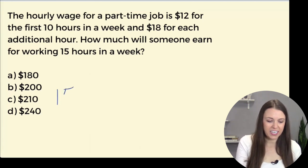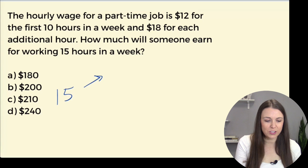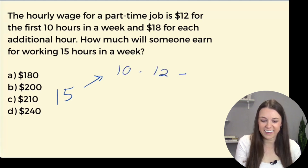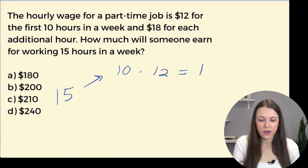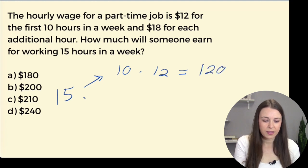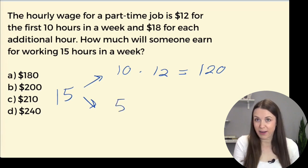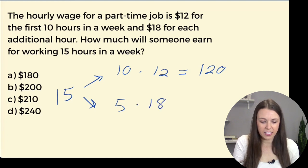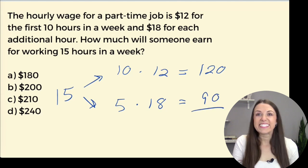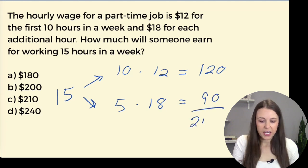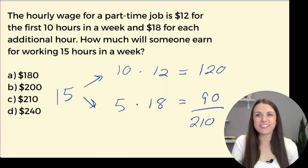So we have 15 hours and we're going to break that into 10 hours times $12 for the first 10 hours, so we get 120. And then we have an additional five hours — because 15 minus 10 is five — times 18 is 90. So we get $210 for your 15 hours.